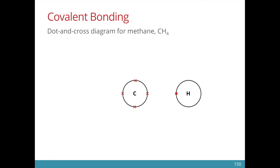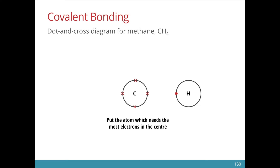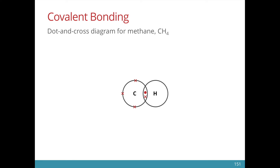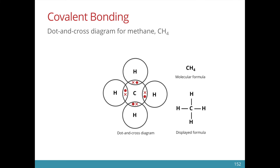Let's go on to another example: methane. Methane is a molecule formed between carbon and hydrogen. Carbon has four valence electrons and it will need four more. Hydrogen has one valence electron and it needs one more. A simple rule is to put the atom which needs the most electrons — in this case carbon — in the center. We can have hydrogen bonded to carbon. Hydrogen will have satisfied its outermost shell of two electrons, but carbon still needs three more. We get three more hydrogen atoms to come in and bond to carbon. This is the dot and cross diagram for methane. Notice that all the valence electrons of carbon are involved in bonding.